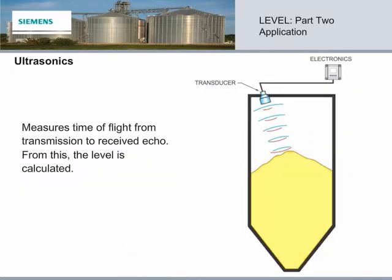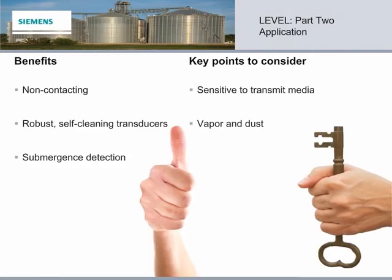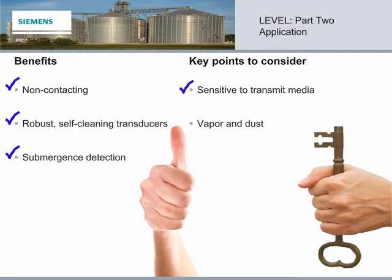Ultrasonic technology measures time of flight from transmission to the received sonic echo, from which the level is calculated. Ultrasonic technology is the most common non-contacting level technology in use today. The robust self-cleaning transducers require little maintenance as they withstand vibration and material buildup. With Siemens Ultrasonics, a transducer with a submerging shield will also detect submerged conditions. Ultrasonics requires a medium to carry the sound wave from the transducer to the material — clear air is ideal, and other homogenous gases are compatible, although some may not transport the sound wave efficiently. Gases such as carbon dioxide seriously attenuate the sound wave, making a level reading difficult. Vapor and dust can do the same, so check out your application very carefully.